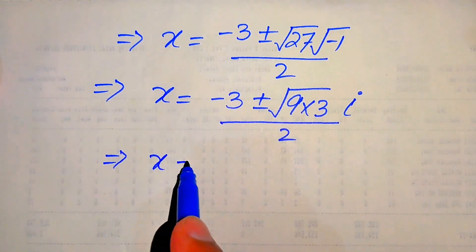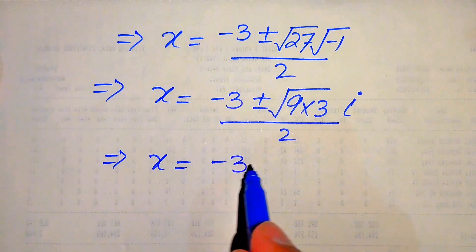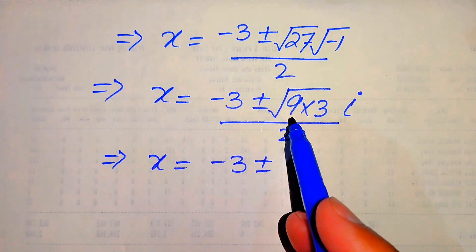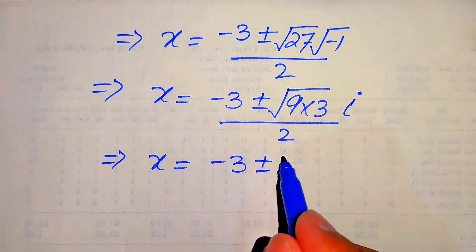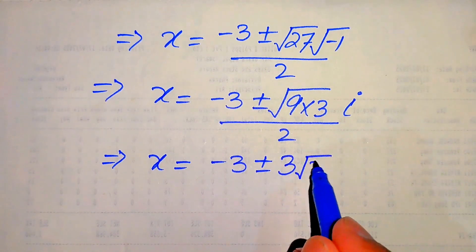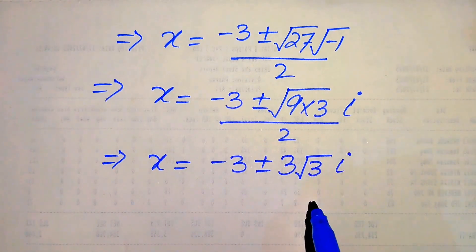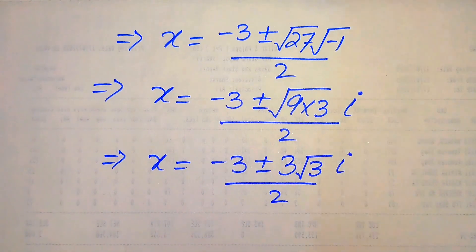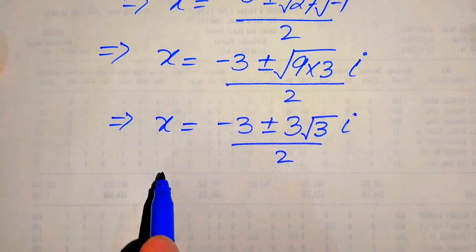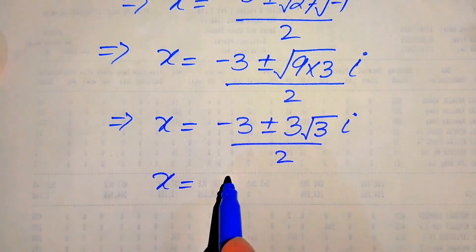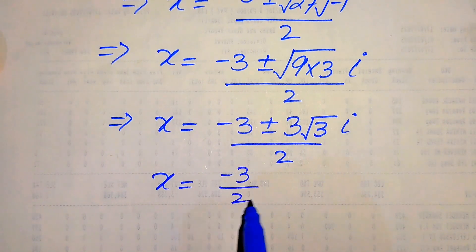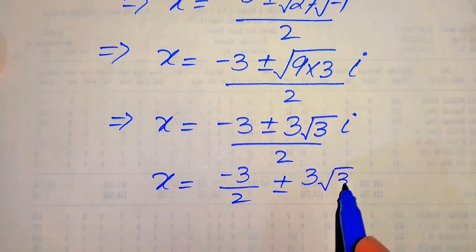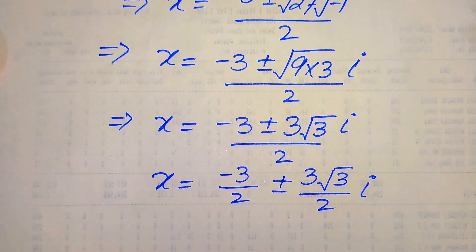Continuing, x equals minus 3 plus or minus the square root of 9 times 3 times iota, divided by 2. The square root of 9 is 3, so this becomes minus 3 plus or minus 3 times square root of 3 times iota, divided by 2. Breaking the fraction, we write: minus 3 over 2, plus or minus, 3 times square root of 3 over 2 times iota.